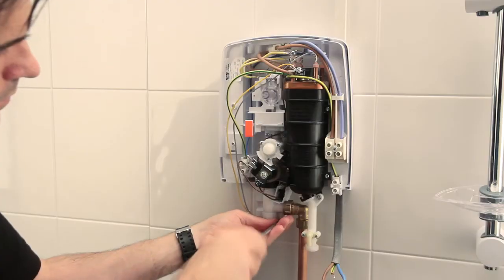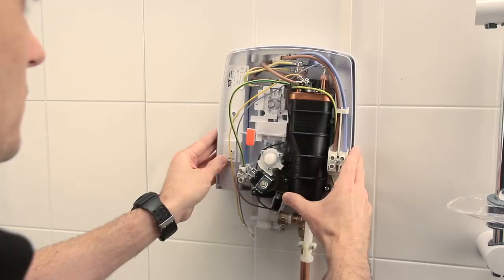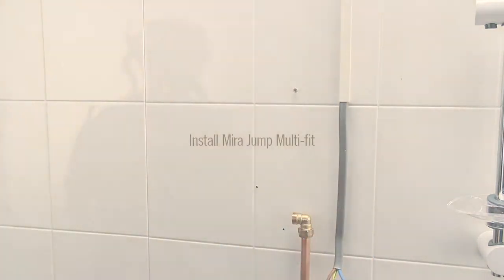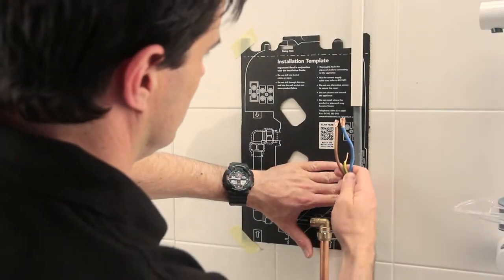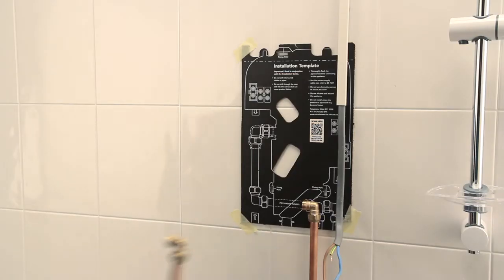Remove the wall fixing screws and remove the shower unit from the wall. In this instance, the electric supply is from the top right and the water supply is from the bottom right.